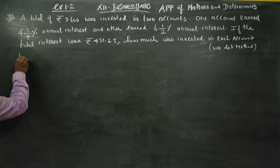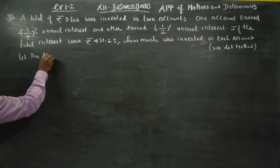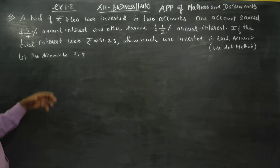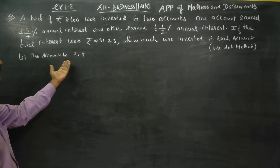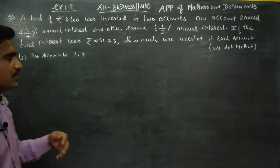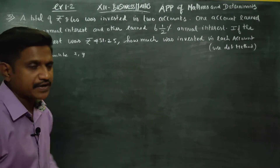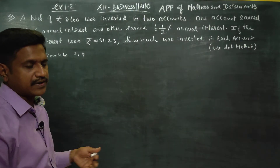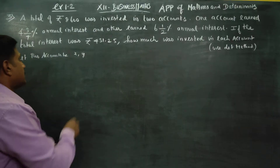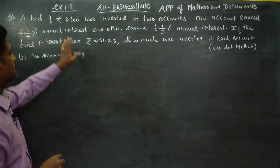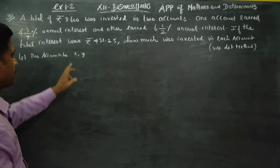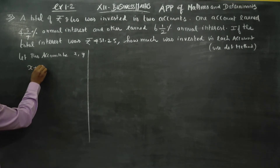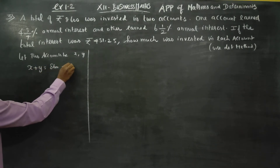Let the two accounts be x and y. For example, one investment in a bank, post office, society, or share market. Then there are two investments. The first equation is x plus y is equal to 8600. That is equation number one.